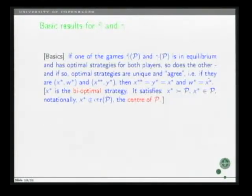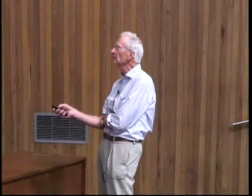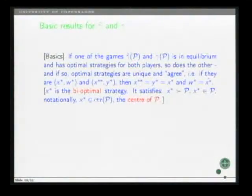Now, optimal strategies are defined in the natural way, and if we look at the standard minimax inequality, then following standard, if equality holds and the common value is finite, the game is, by definition, in equilibrium. Okay. Now, some results. The basics is really the following. If one of the games, either in the Y-hat region or in the Y domain, is in equilibrium and allows optimal strategies for both players, so does the other. And if so, optimal strategies are unique, and furthermore, they are the same. That is, if this is the pair of optimal strategies in the Y-hat domain and this in the Y-domain, then the two states are actually the same, and W-star is the control adapted to the belief instance Y-star. And I denote X-star, in that case, as the bio-optimal strategy. And it lies in what I call the center of P.